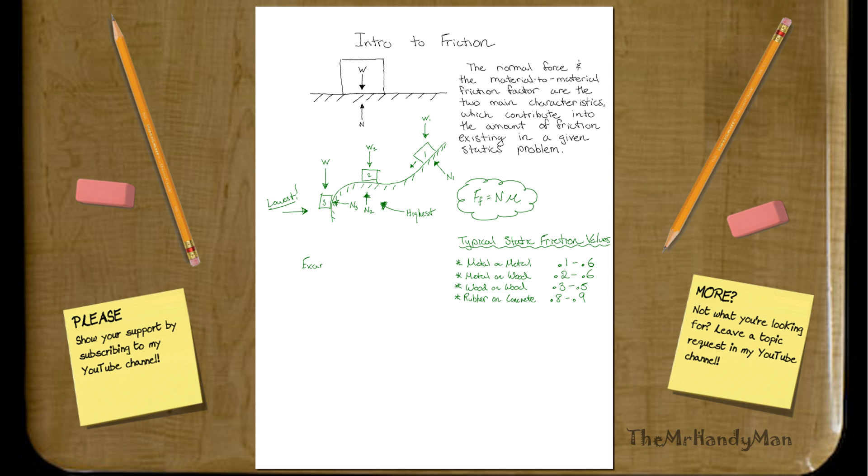Let's see if I can do a quick one. For this example, I'm just going to draw, do a quick drawing. Maybe call this 30 degrees right here. And we're going to have a box, which is going to be an easy number, 100 pounds.